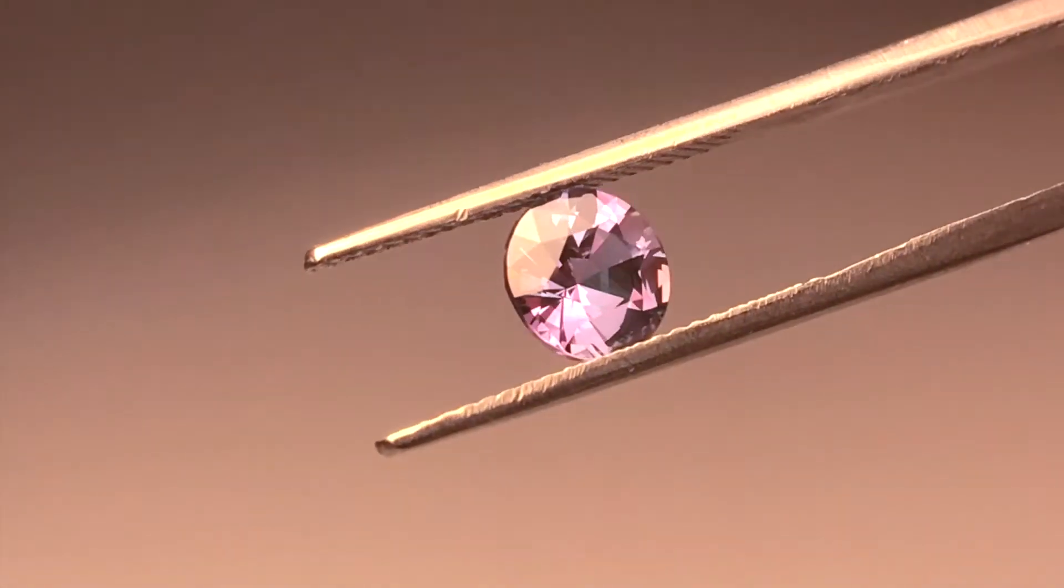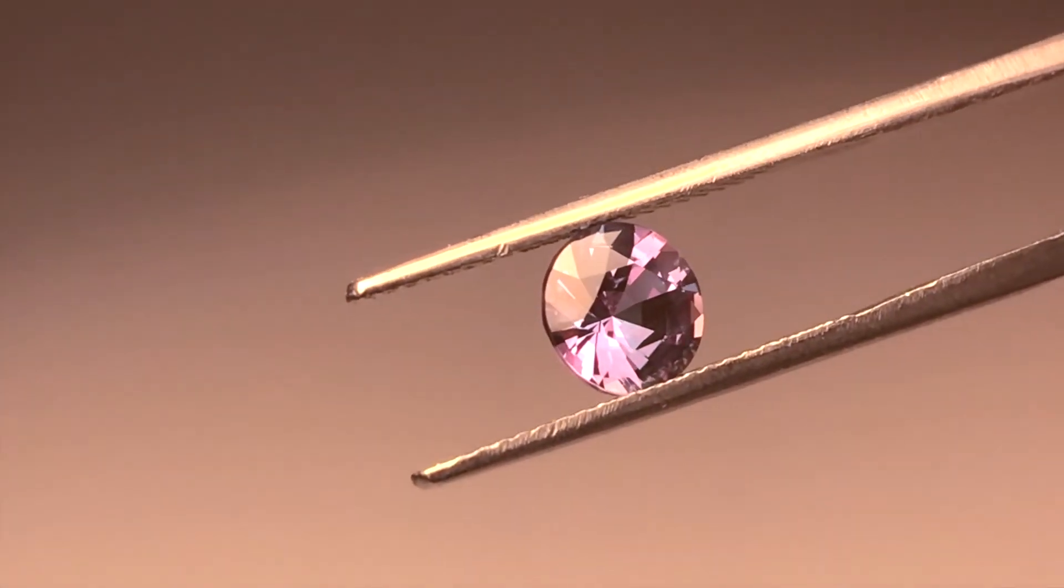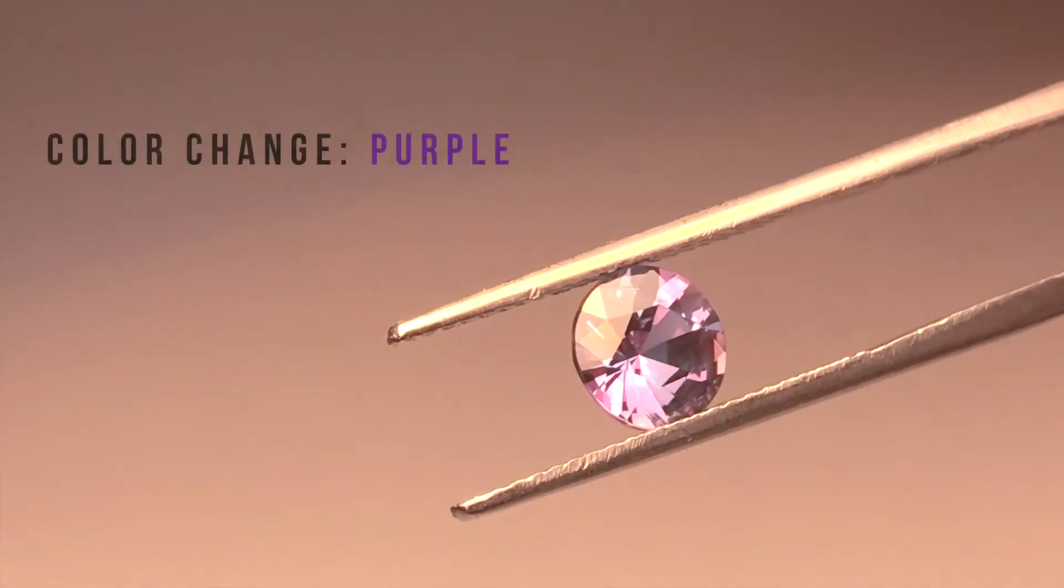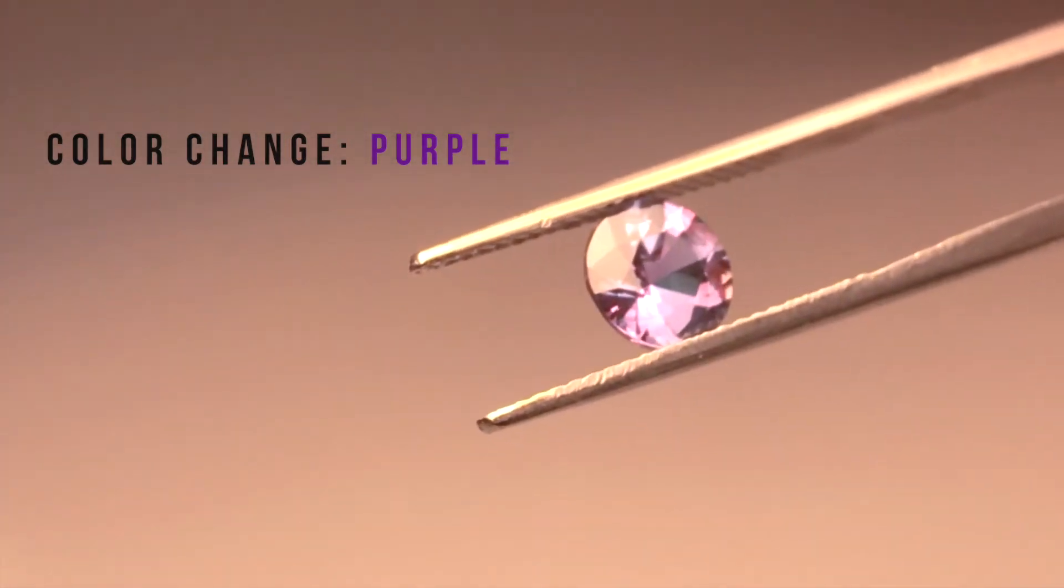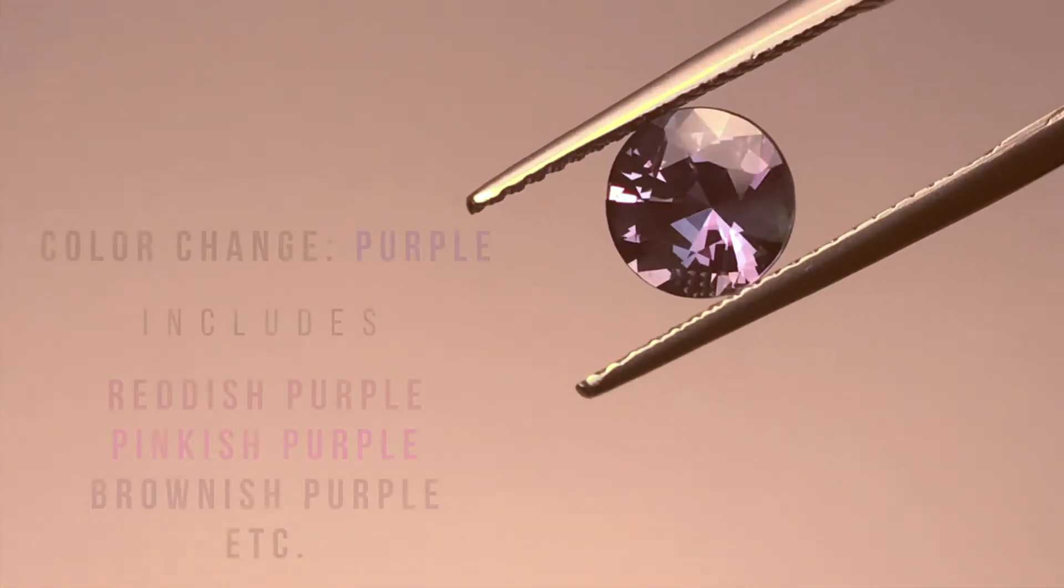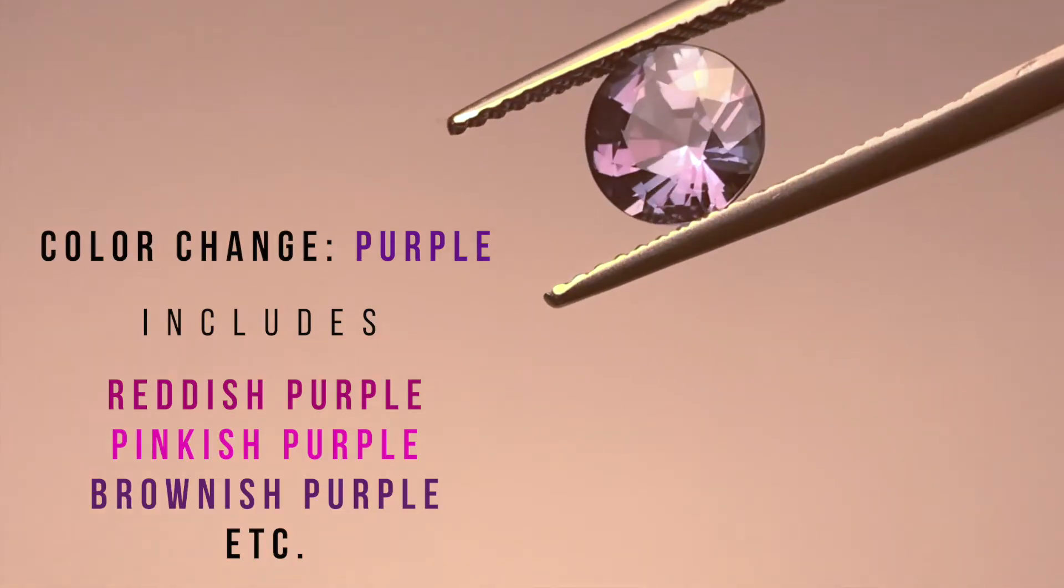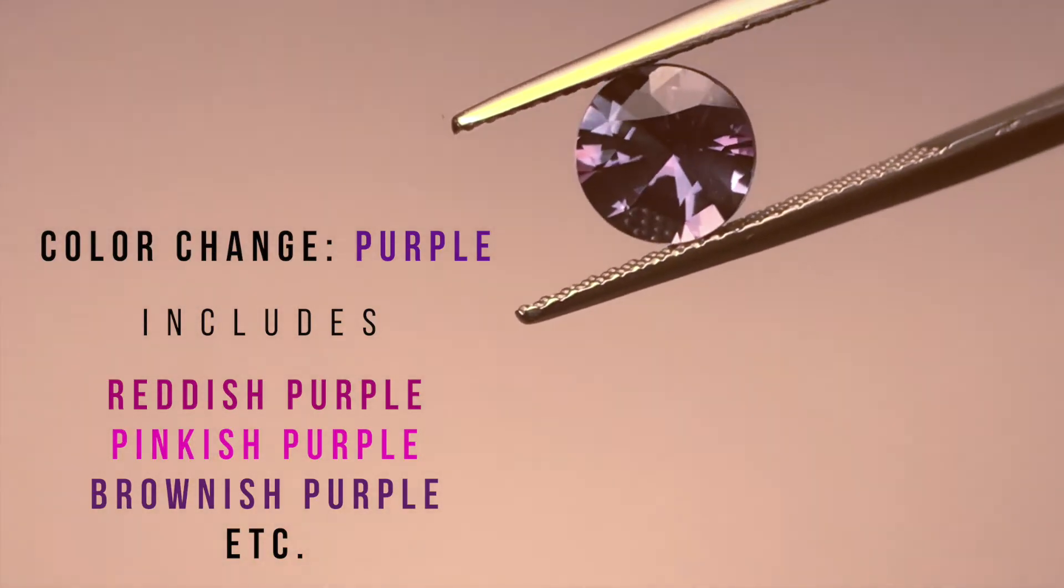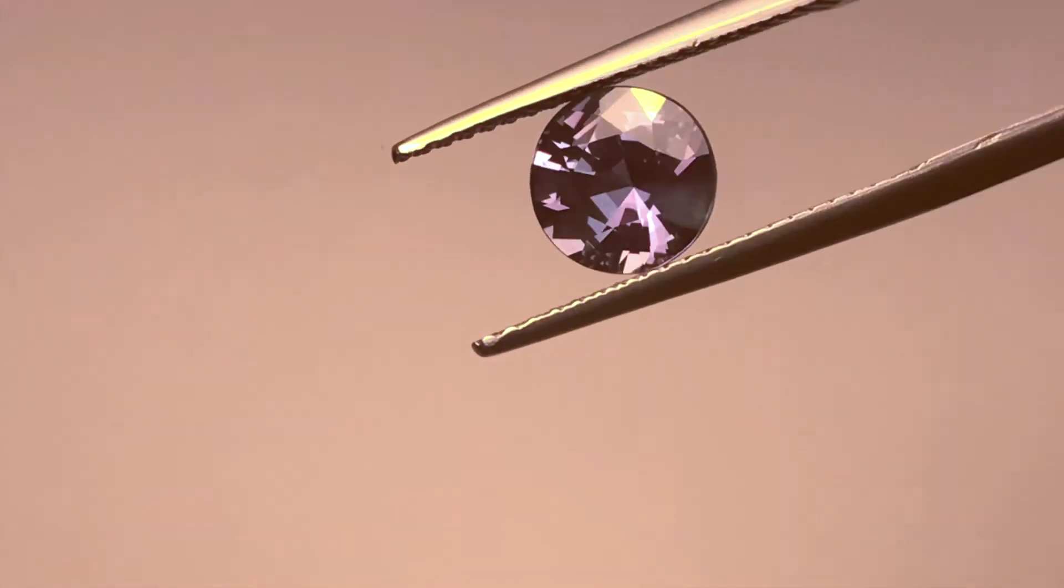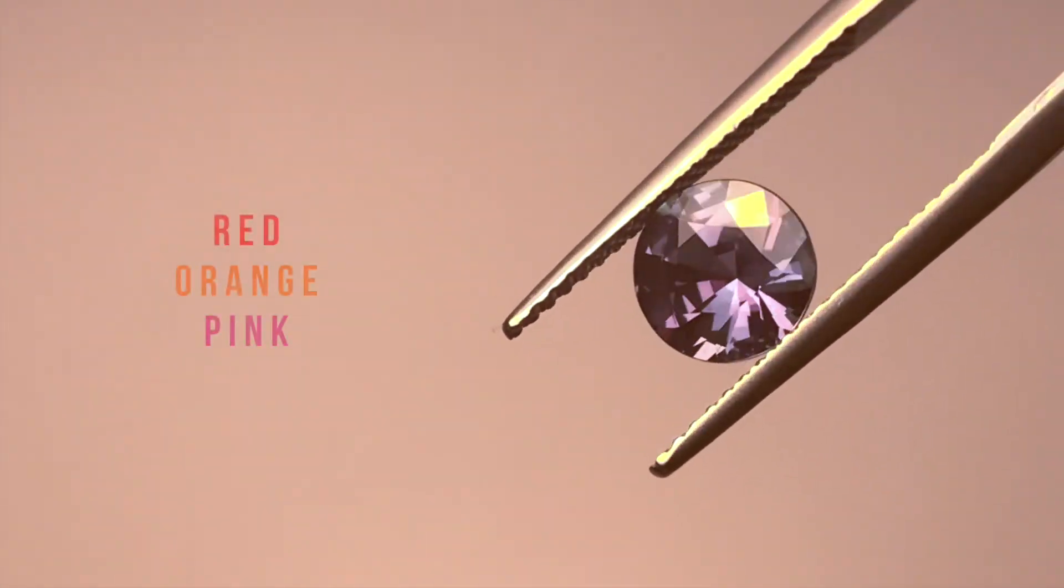Once under this light, which should normally be displayed in a darker setting, the alexandrite should appear purple. You may see variations of reddish purple, pinkish purple, and brownish purple. Other color hues may include red, orange, and pink.